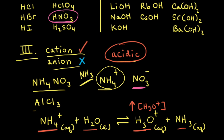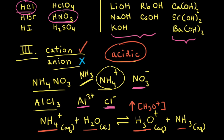As another example, let's consider an aqueous solution of aluminum chloride. Aluminum chloride consists of the aluminum 3+ cation and the chloride anion. The chloride anion is the conjugate base to hydrochloric acid, which is a strong acid. Therefore, the chloride anion does not react with water. The aluminum 3+ cation is not from group 1A or a heavier group 2A. Therefore, we can conclude that it is going to react with water. Small cations with charges of 2+ or greater can react with water.